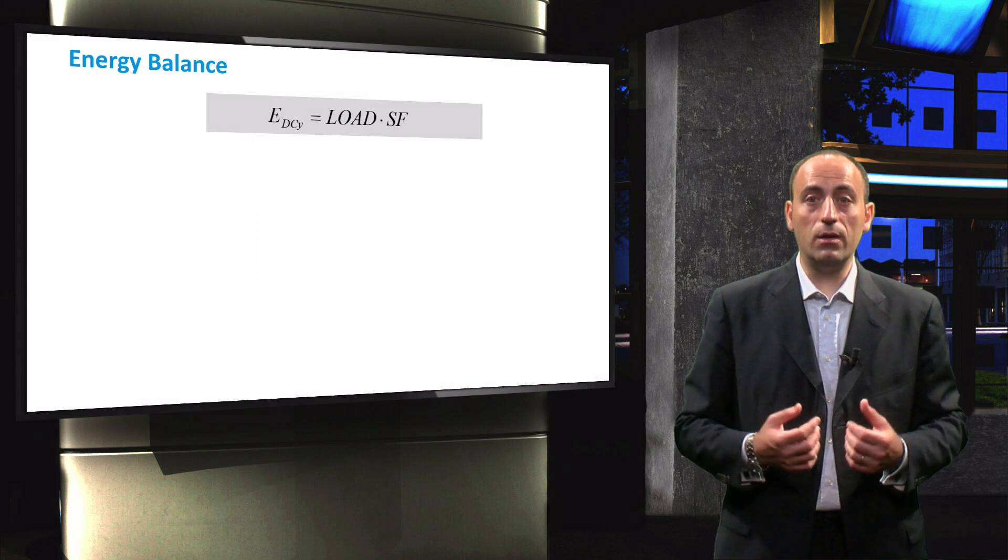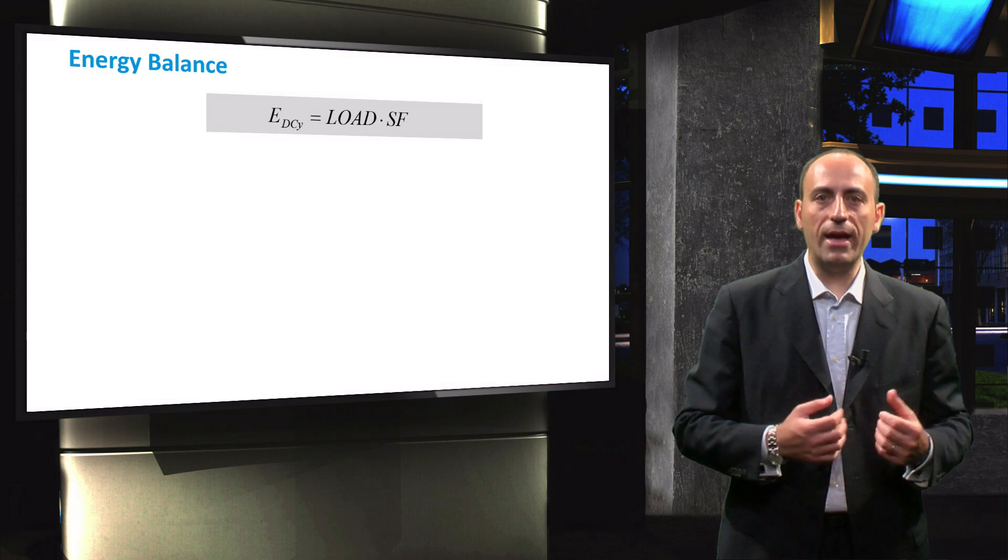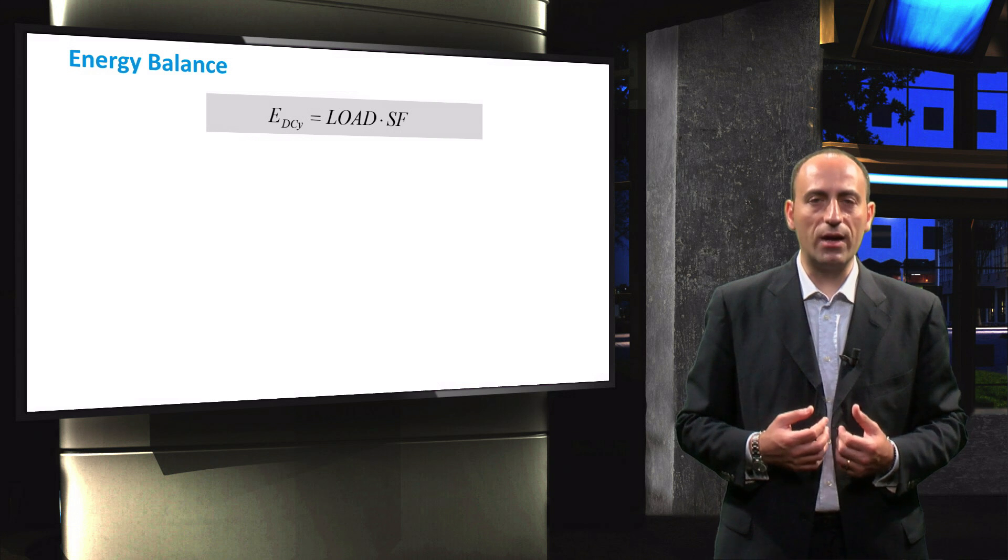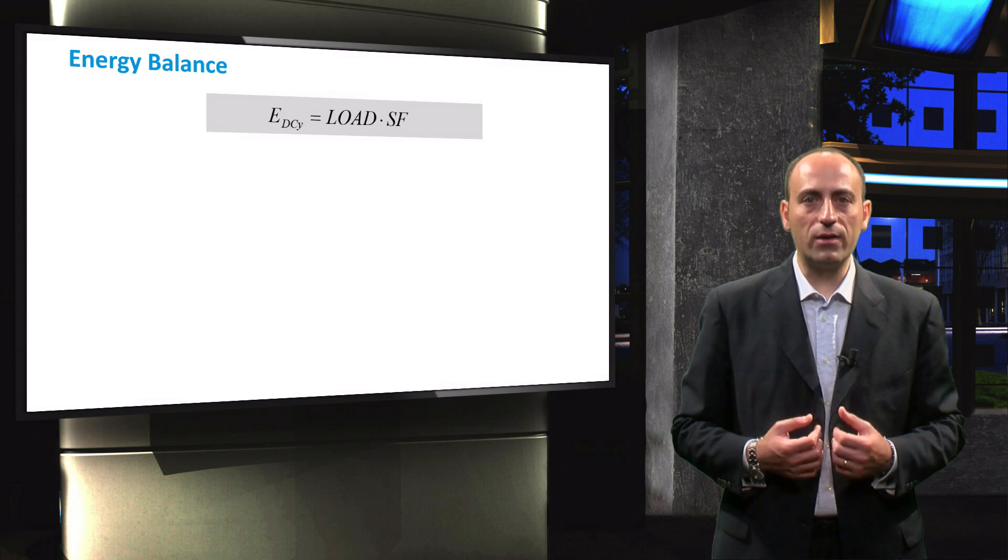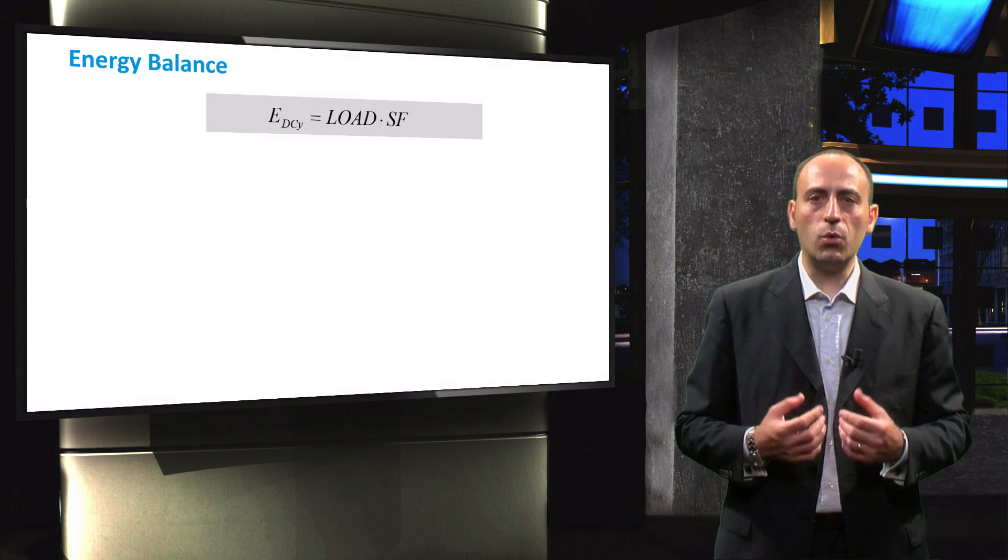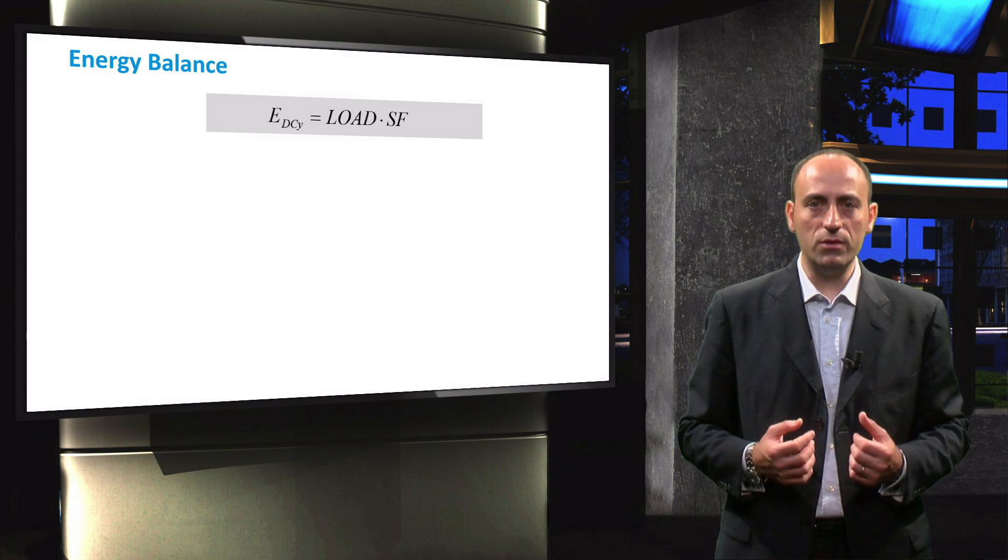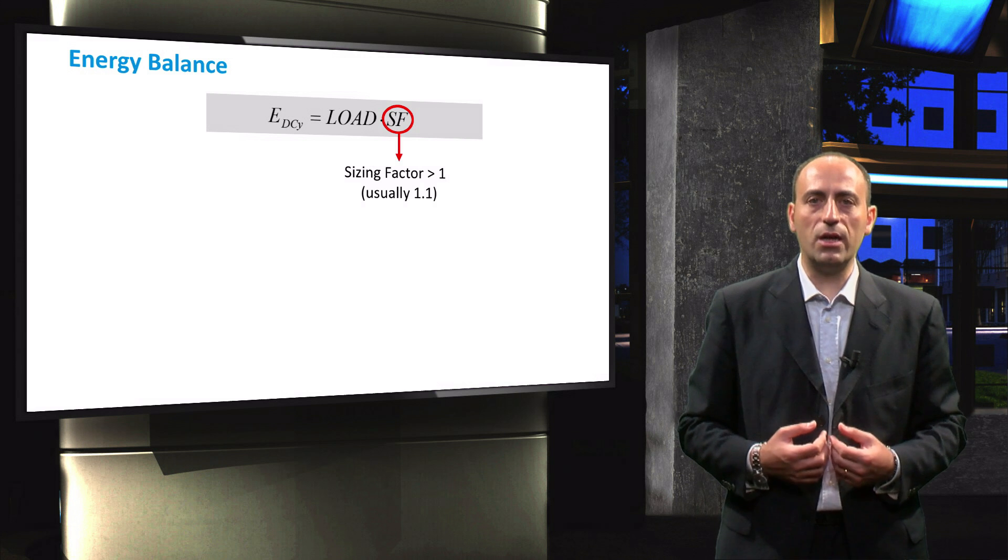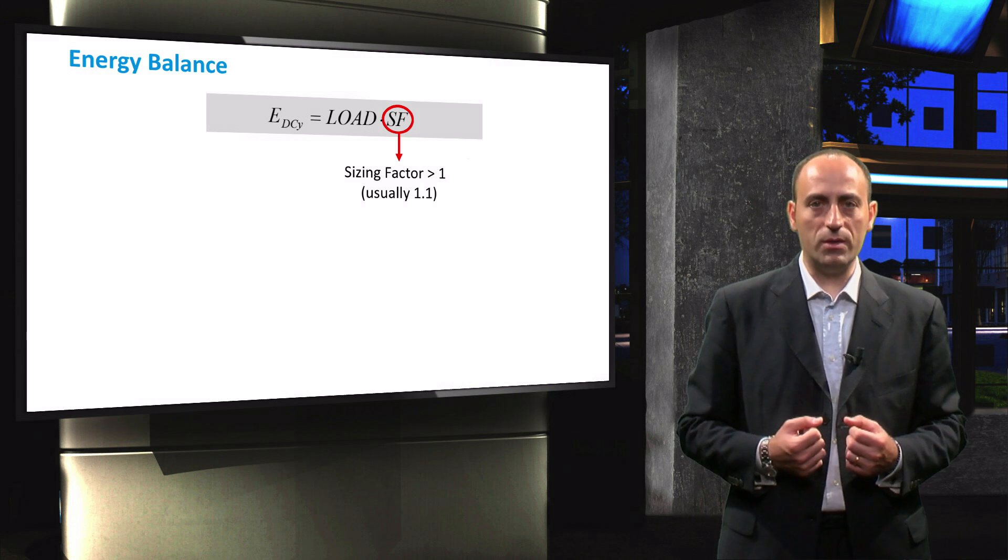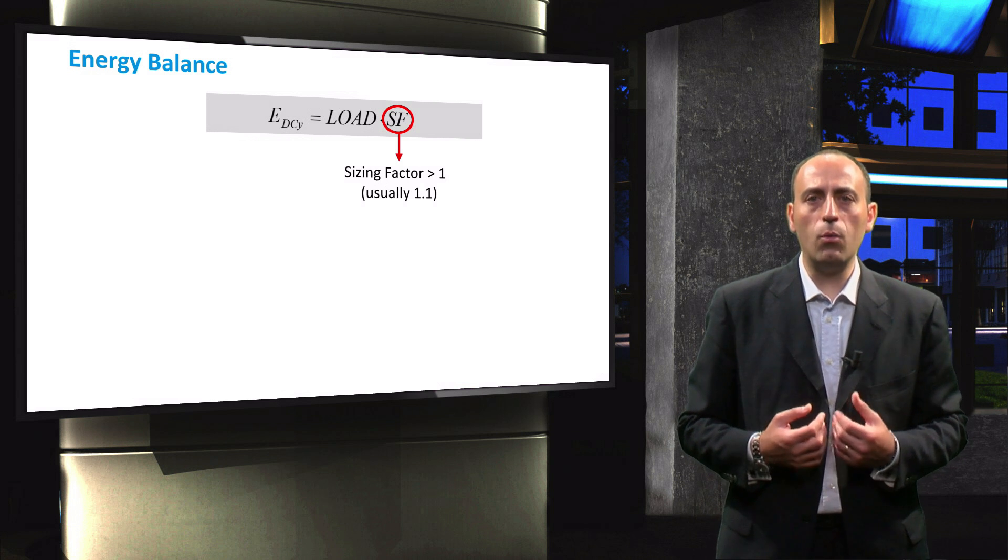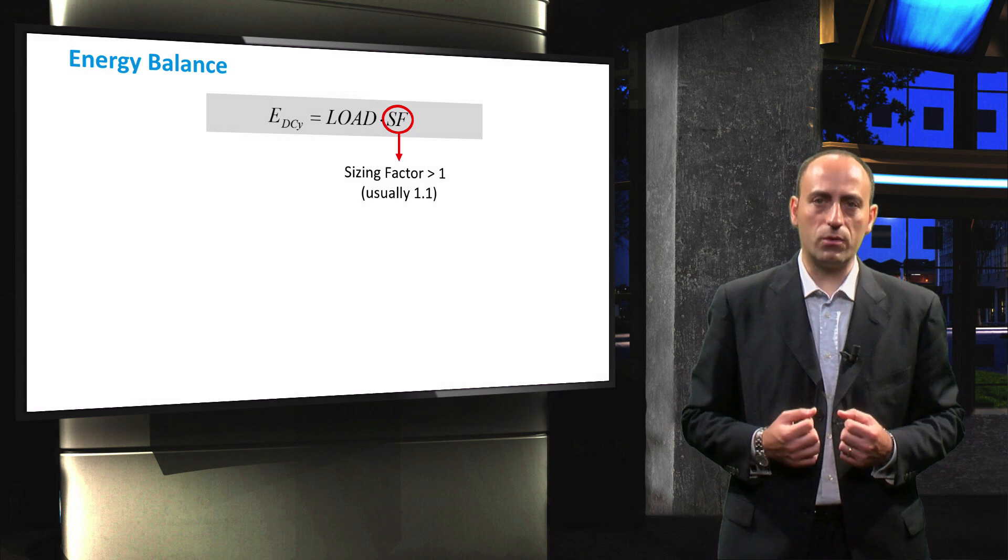Now we know the annual load demand and the annual energy generation. To complete the energy balance, we introduce a sizing factor, SF. The system sizing factor is a flexible value that provides a certain degree of freedom to adjust the PV system size during the design phase. It is inserted to allow for additional losses such as the accumulation of dirt on the modules, or to increase the system performance. The value of the sizing factor should be greater than 1, and the value of 1.1 is usually assumed as a first approximation.